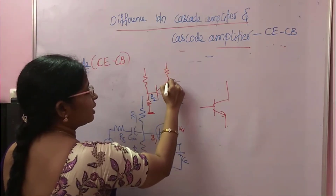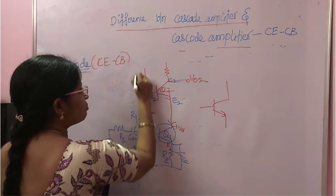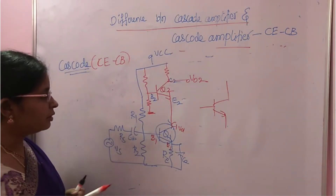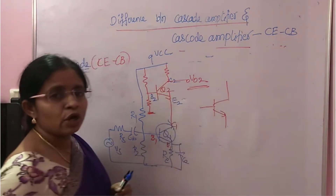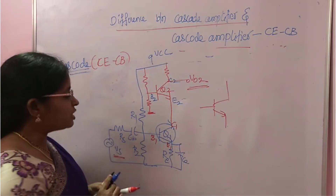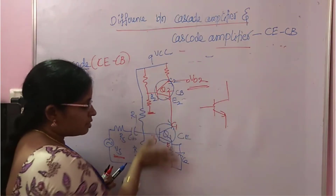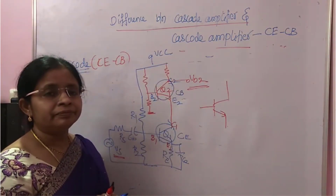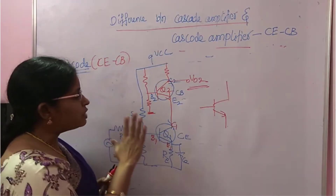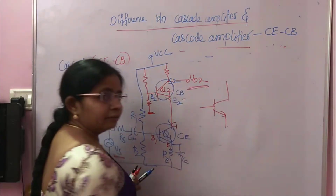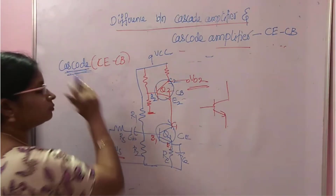At the collector you have to collect the output — this is V02. You have to give one supply. Just taking like this and connecting. So the total output here is V02. Q2 is CB, Q1 is CE. On the top of CE there is CB. This type of multistage amplifier is called cascode.